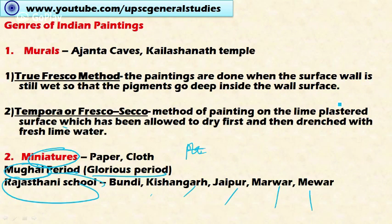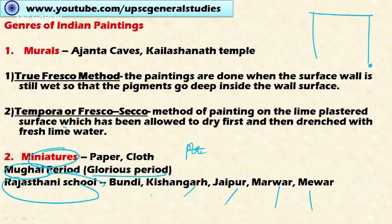Mural paintings can be done through two methods. The first is the true fresco method: paintings are done when the wall surface is still wet, so that the pigments go deep inside the wall surface. Natural pigments were used earlier, which ensures the permanency of the painting.